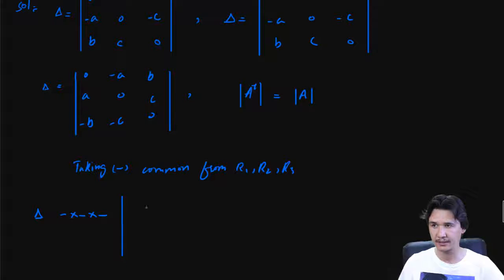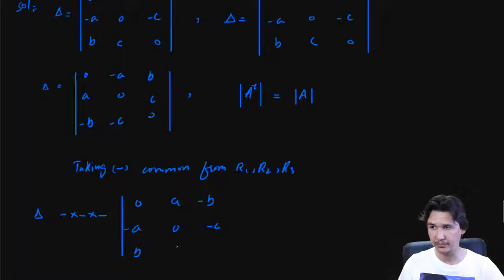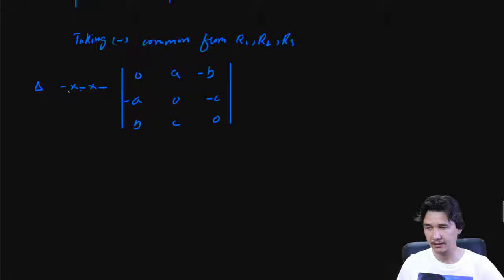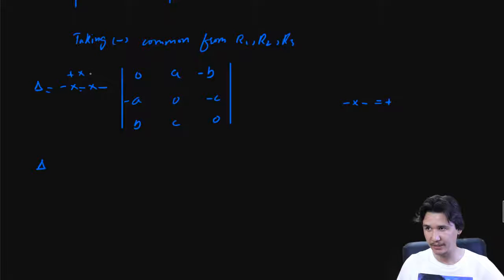After factoring out minus one from each row, the signs flip: minus a becomes a, minus b becomes b, and so on. Since we multiply minus by minus we get plus, and the combined three minus signs — minus times minus times minus — gives us an overall minus sign out front.